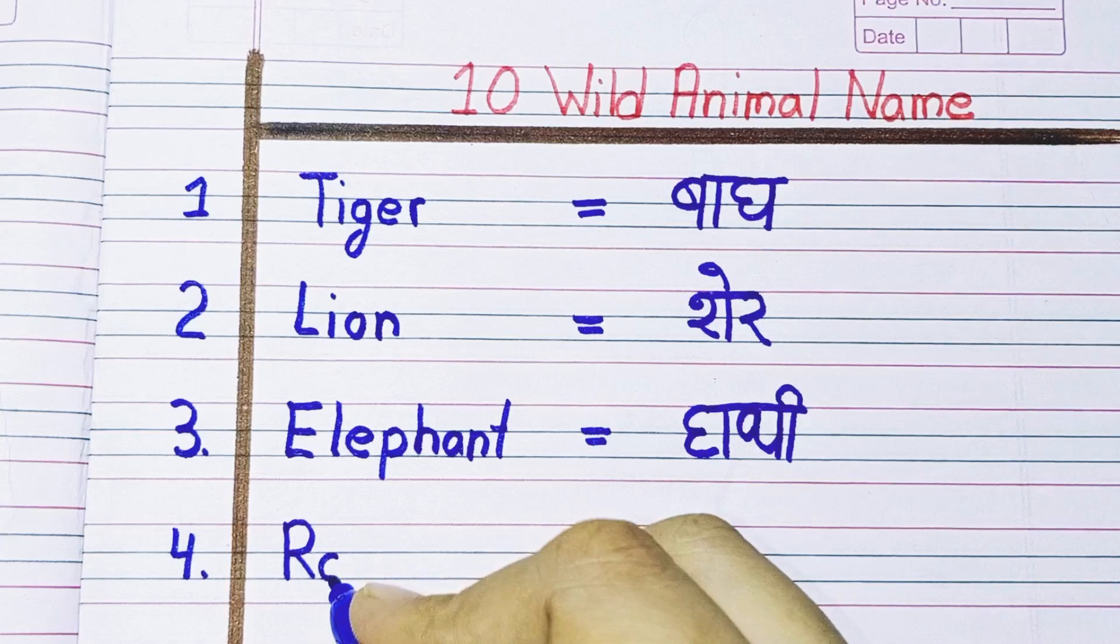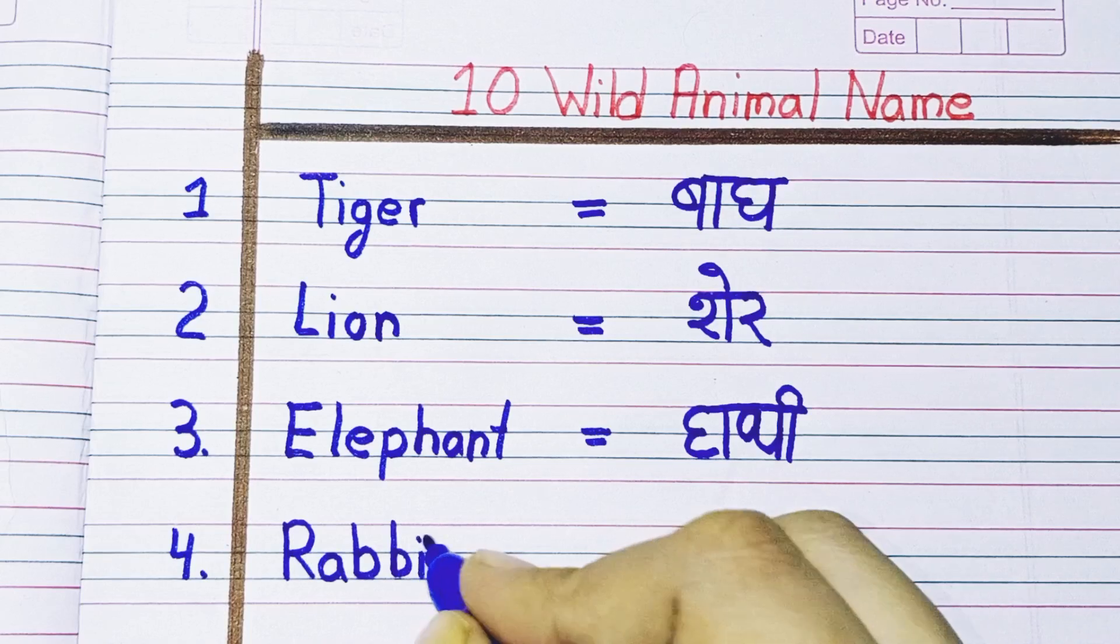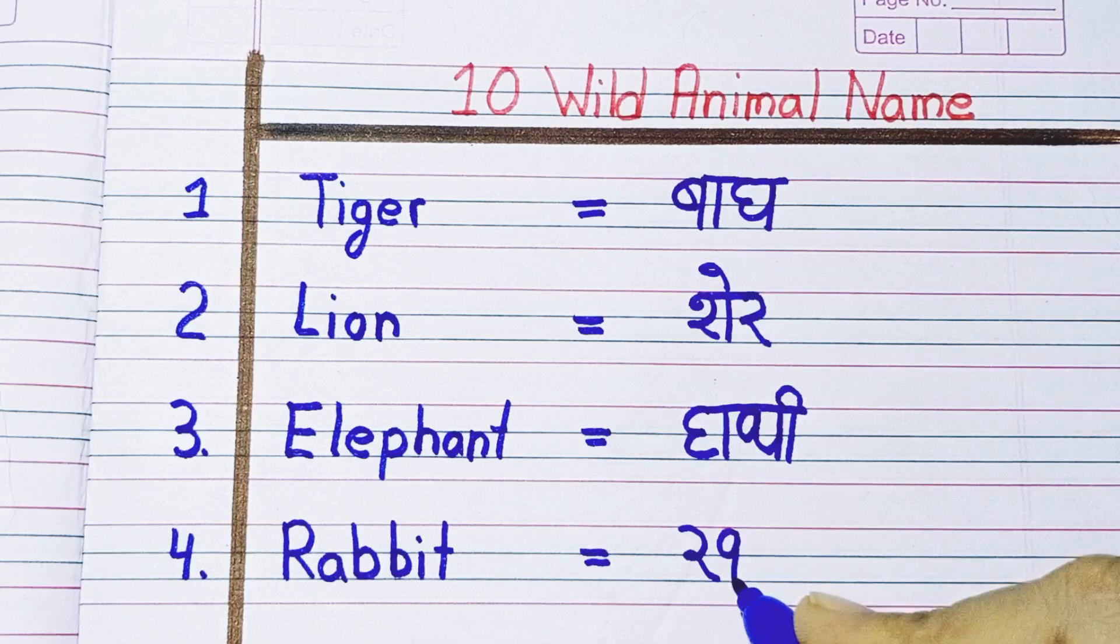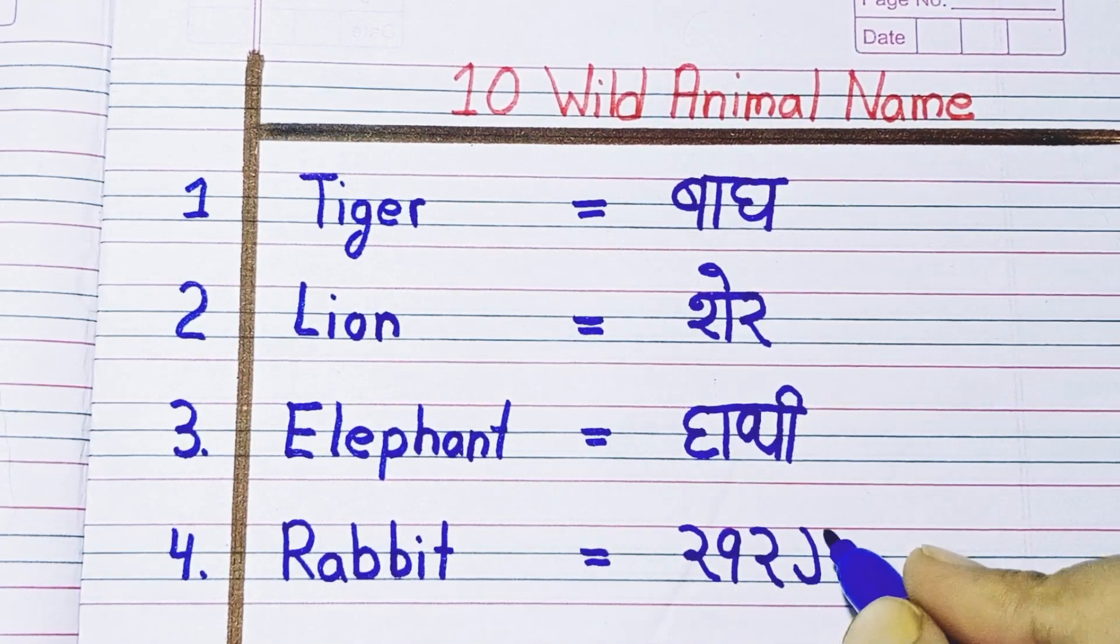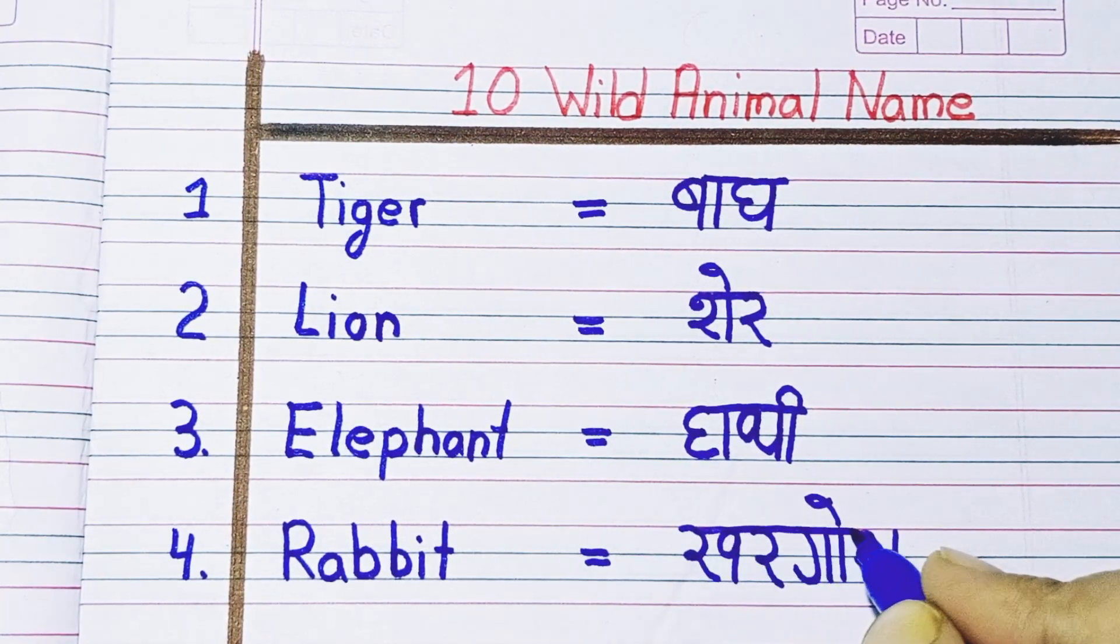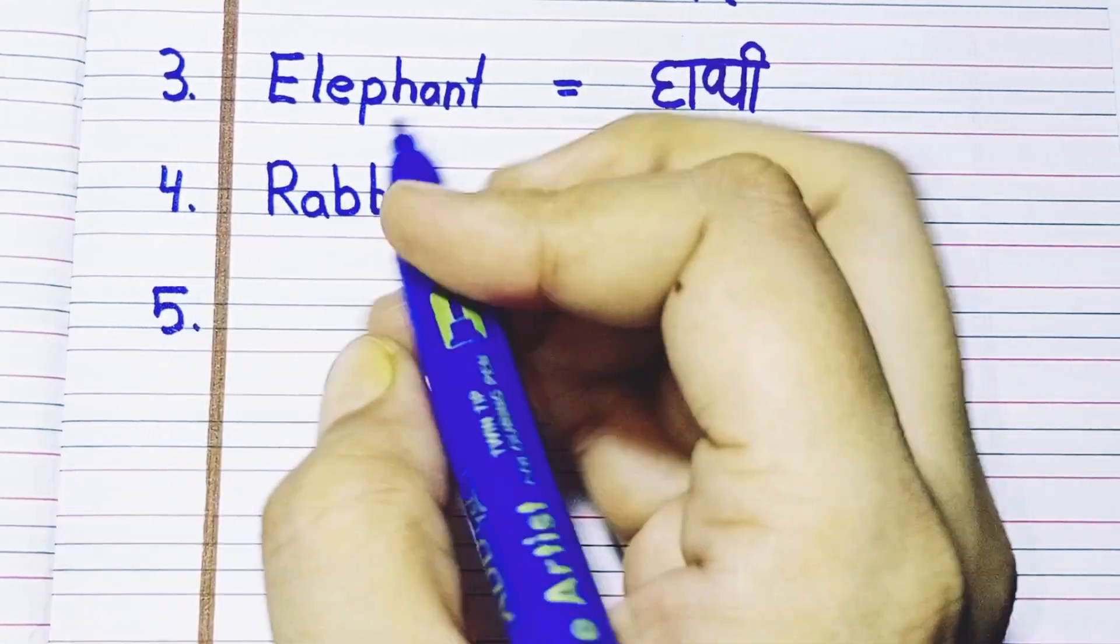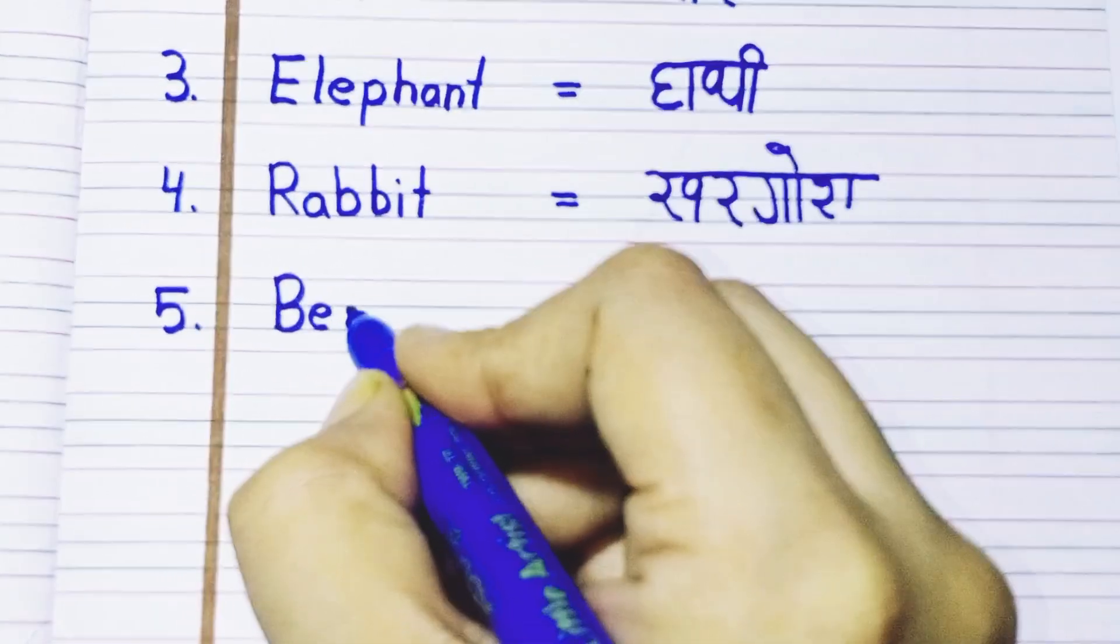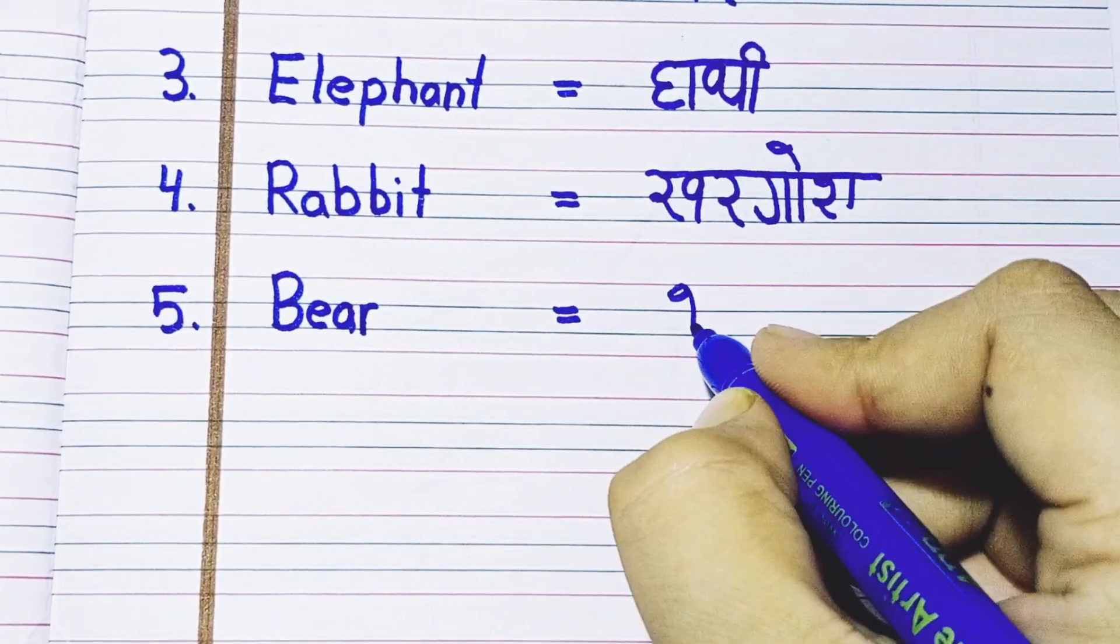Fourth number: R-A-B-B-I-T, rabbit. Rabbit means khargosh. Fifth number: B-E-A-R, bear. Bear means balu.